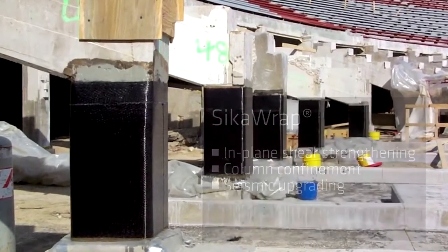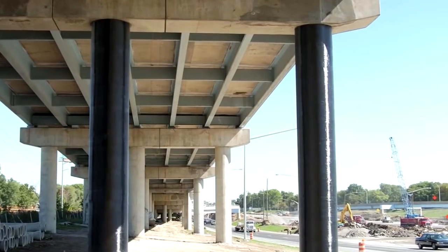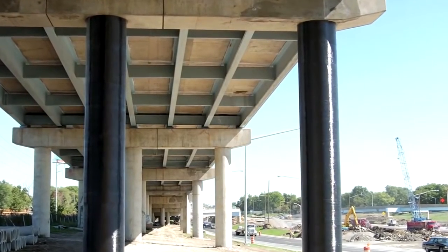Sika Wrap is wrapped around columns and bonded to masonry walls, helping a building to withstand much higher earthquake loadings.